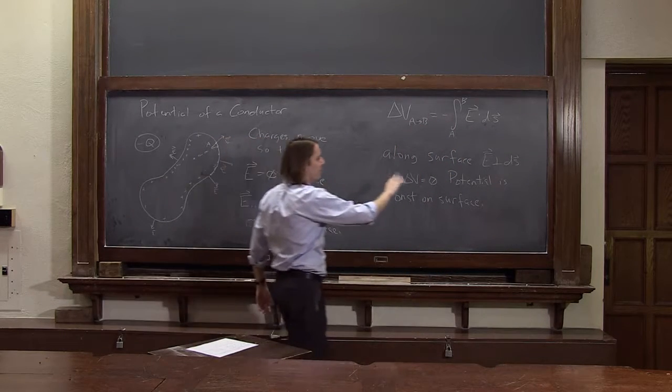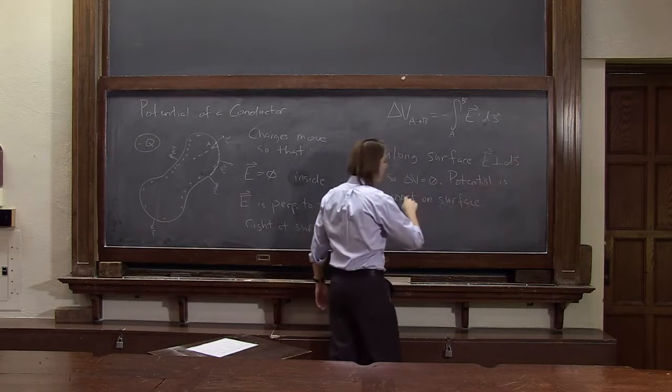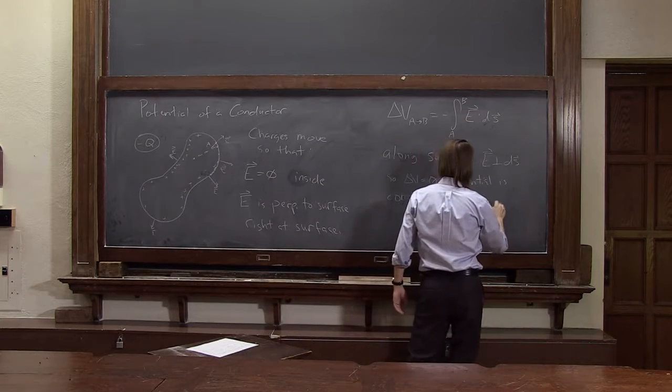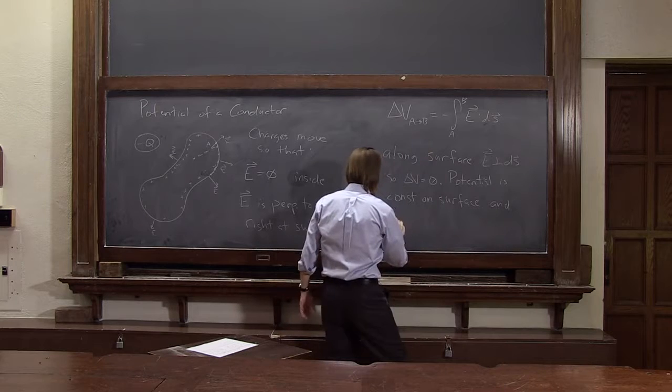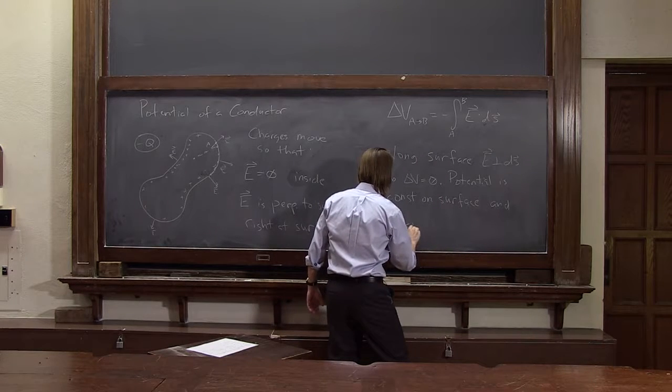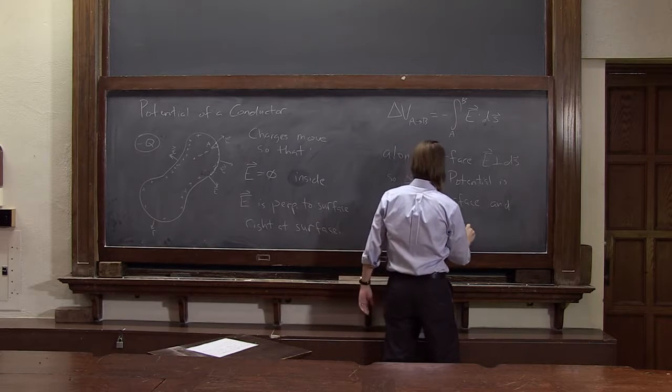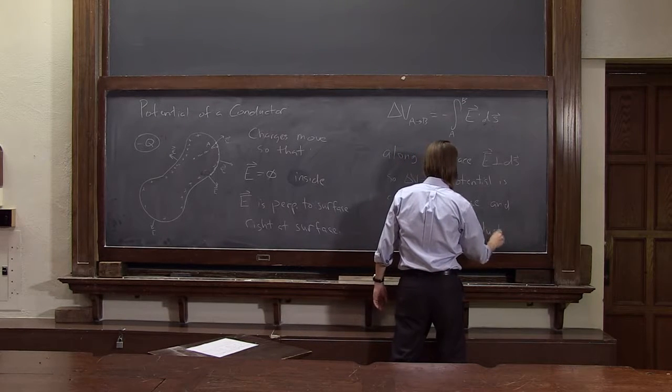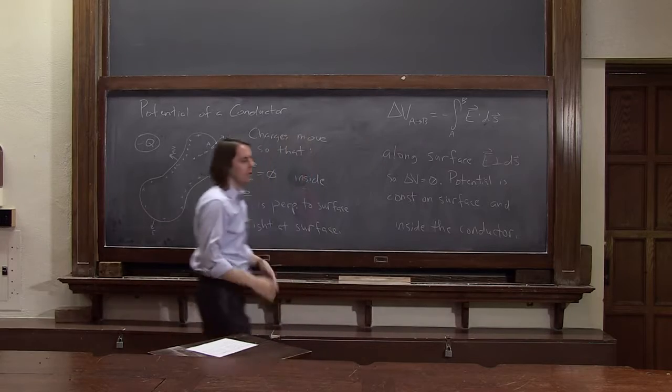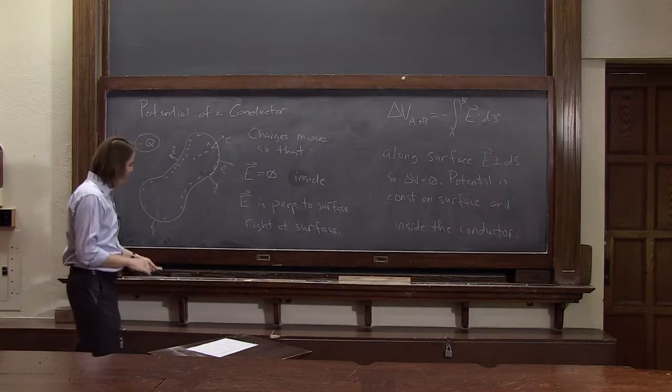So the potential is constant on the surface and inside the metal conductor. That's really all we need to know, but that's very important.